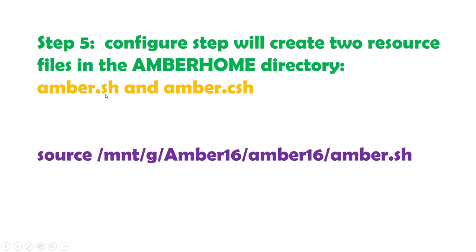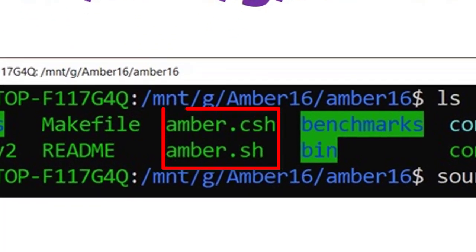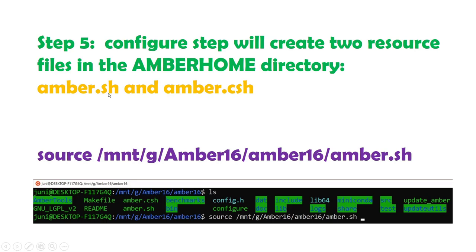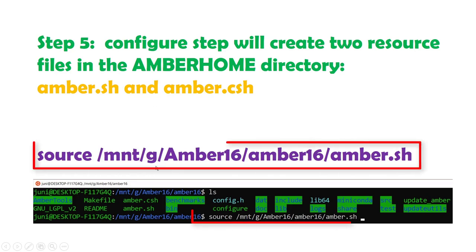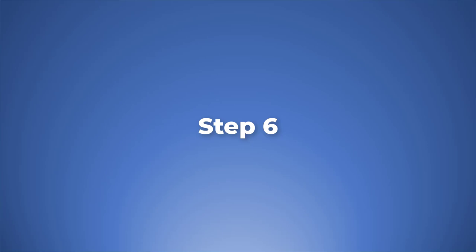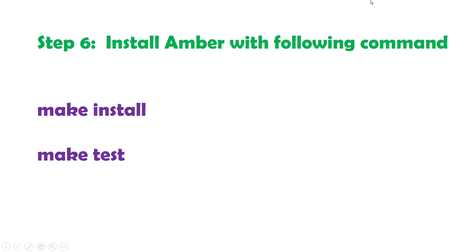The fifth step is to source the files created in step four: amber.sh and amber.csh. Since I am using Bash, I will source amber.sh with the command: source /mnt/g/amber — give the path — then the filename amber.sh.